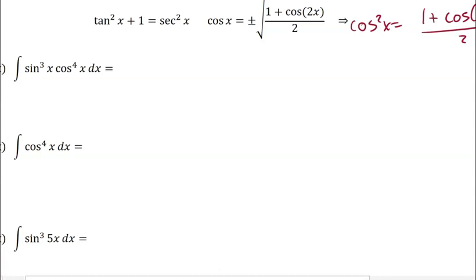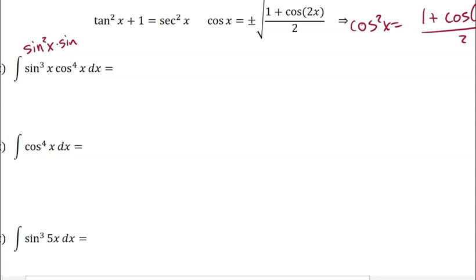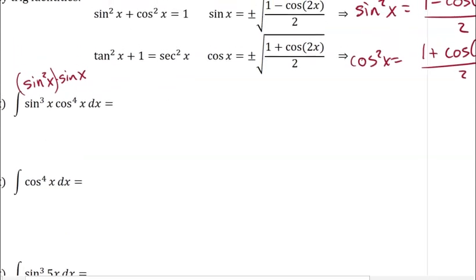So if I'm looking at this sine cubed right here, I know that's the same thing as sine squared times an additional sine of x. And then I also know that sine squared of x is the same as, from my Pythagorean identity, 1 minus cosine squared.